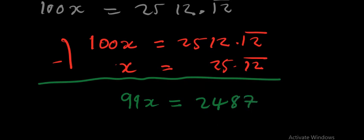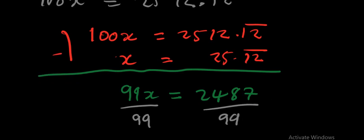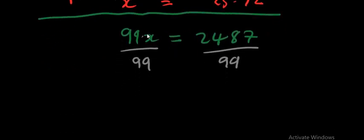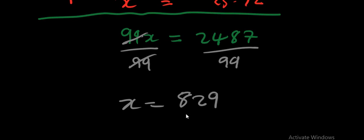We divide throughout by 99, so X = 2487/99. Looking for a common factor — 3 goes into both — we simplify to get X = 829/33. This is the simplest form, and it is also a rational number.